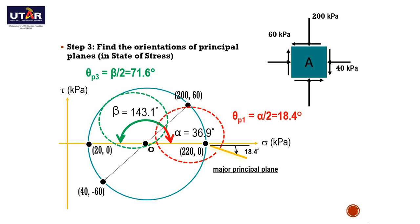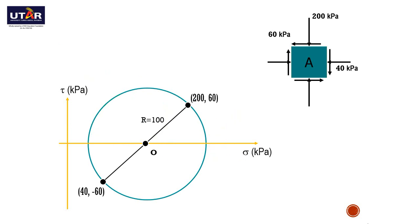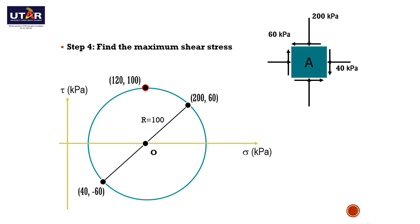Next, we find the maximum shear stress in the element. The maximum shear stress, tau max, occurs at the highest point of the Moore's circle. The maximum shear stress is located at point (120, 100). The y-coordinate represents the shear stress, thus the maximum shear stress is 100 kPa.